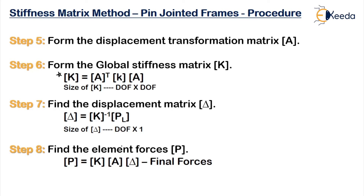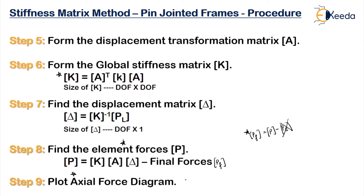Step 8 is to find the element forces. Here, the element forces are directly your final force because, unlike beams where the final force equalled element force minus PE, there is no PE in trusses. So whatever is your PF is your element force directly. Once you find the element forces, step 9 is to draw the axial force diagram. In each member you will get either a tensile force (positive) or a compressive force (negative). Tensile is represented by arrows pointing away from the joint, and compressive by arrows pointing towards the joint.